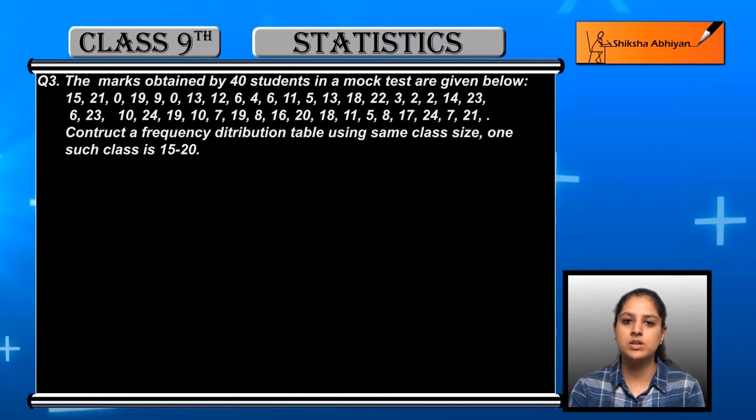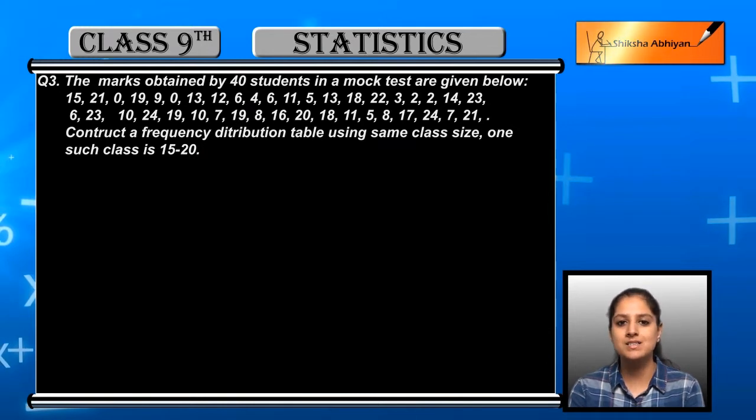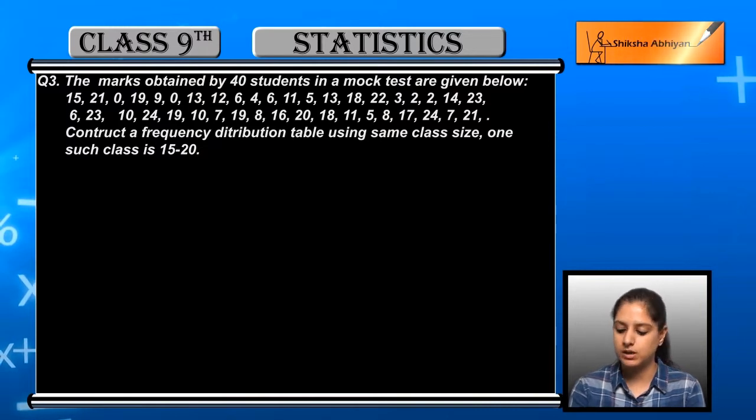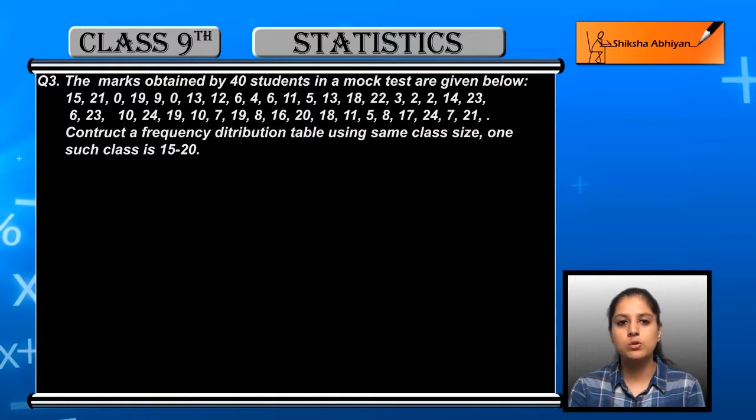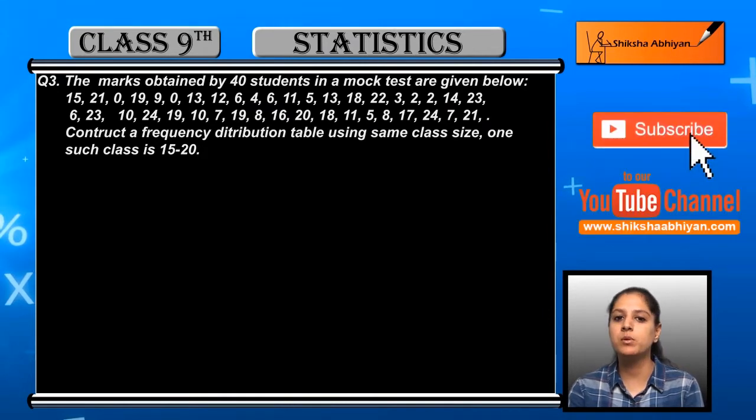It is very evident from this class that the class size is 5. With 5 to 5 class size we have the frequency distribution table where 20 is not included in 15 to 20. But 20 will be included in the next class, that is 20 to 25. We have 20 included but 25 will not be included.